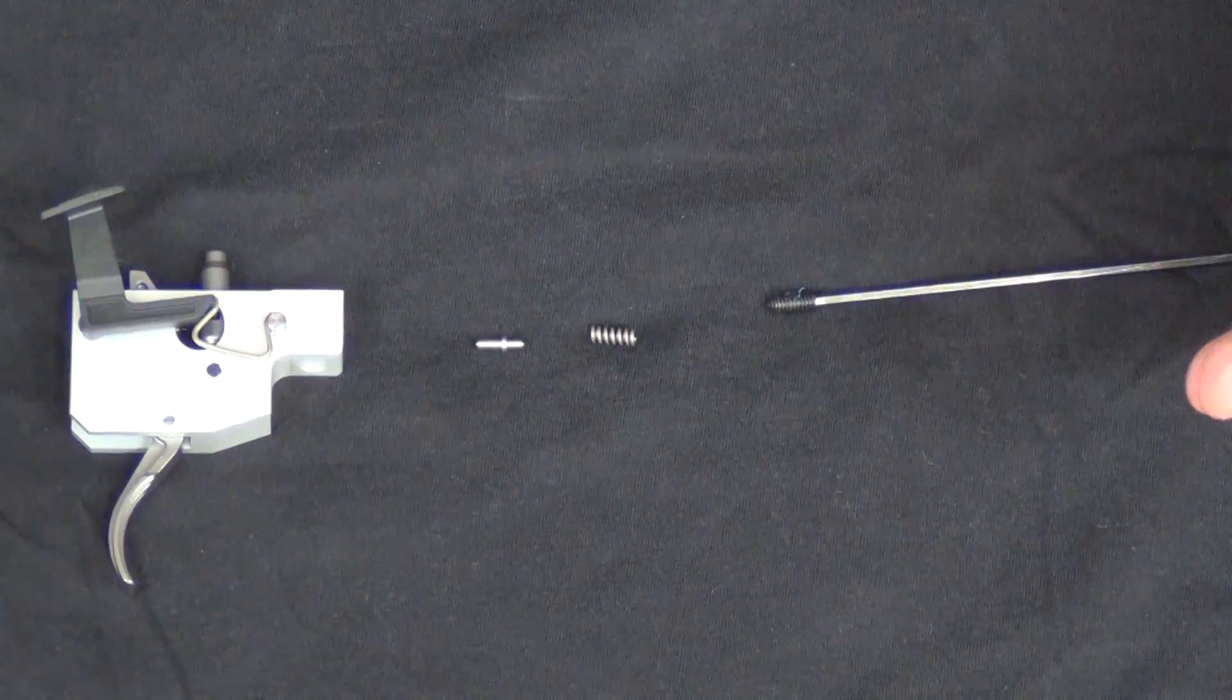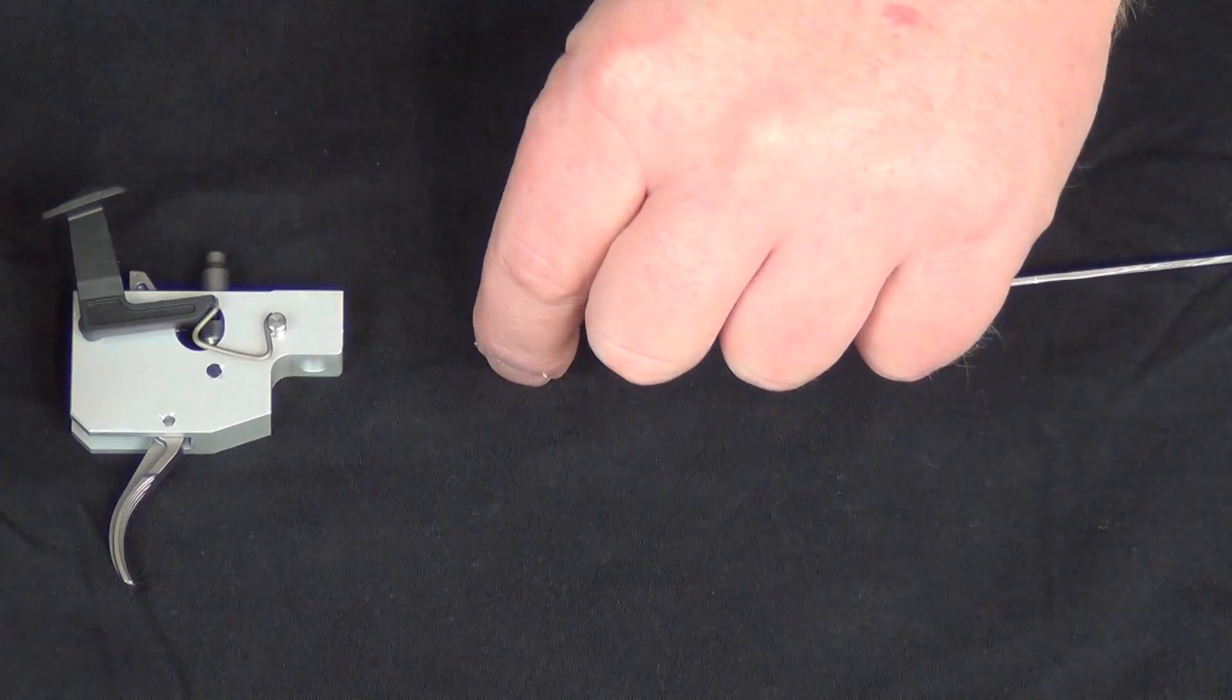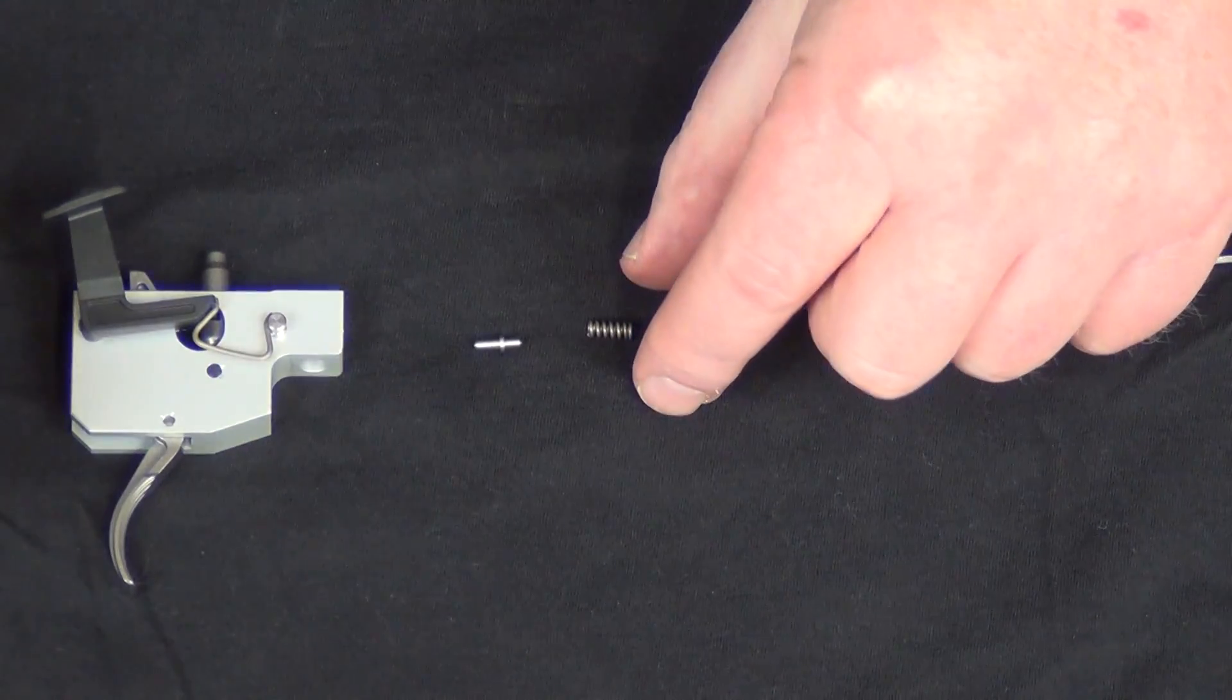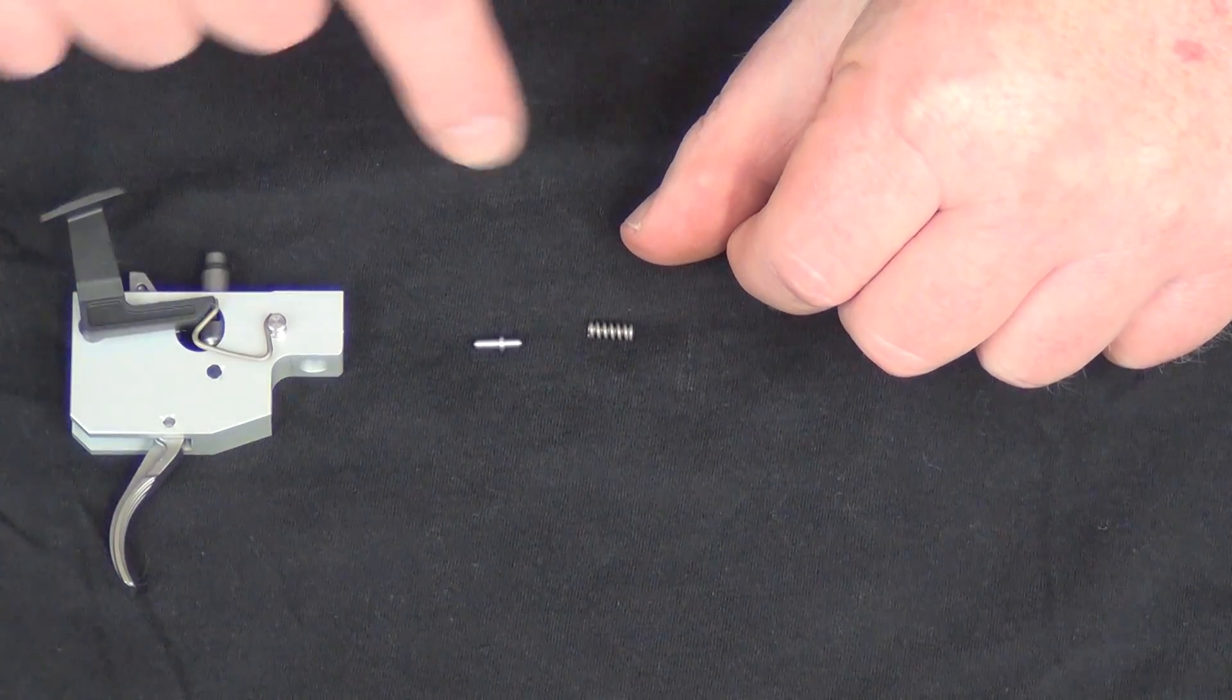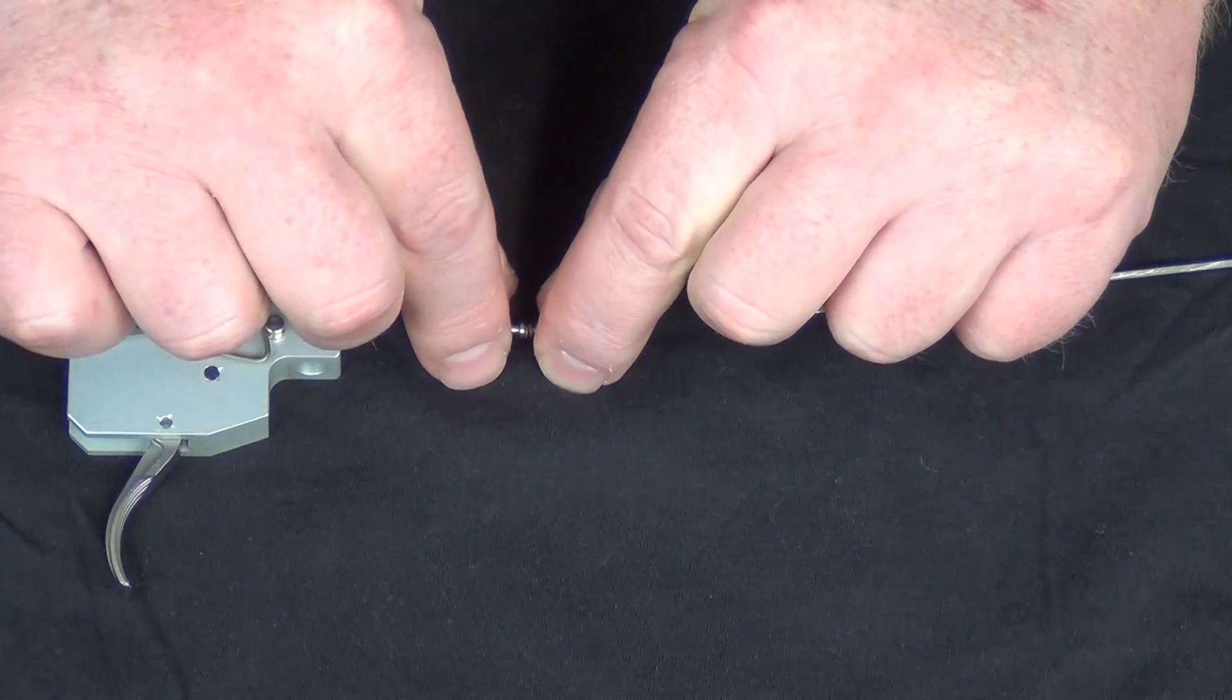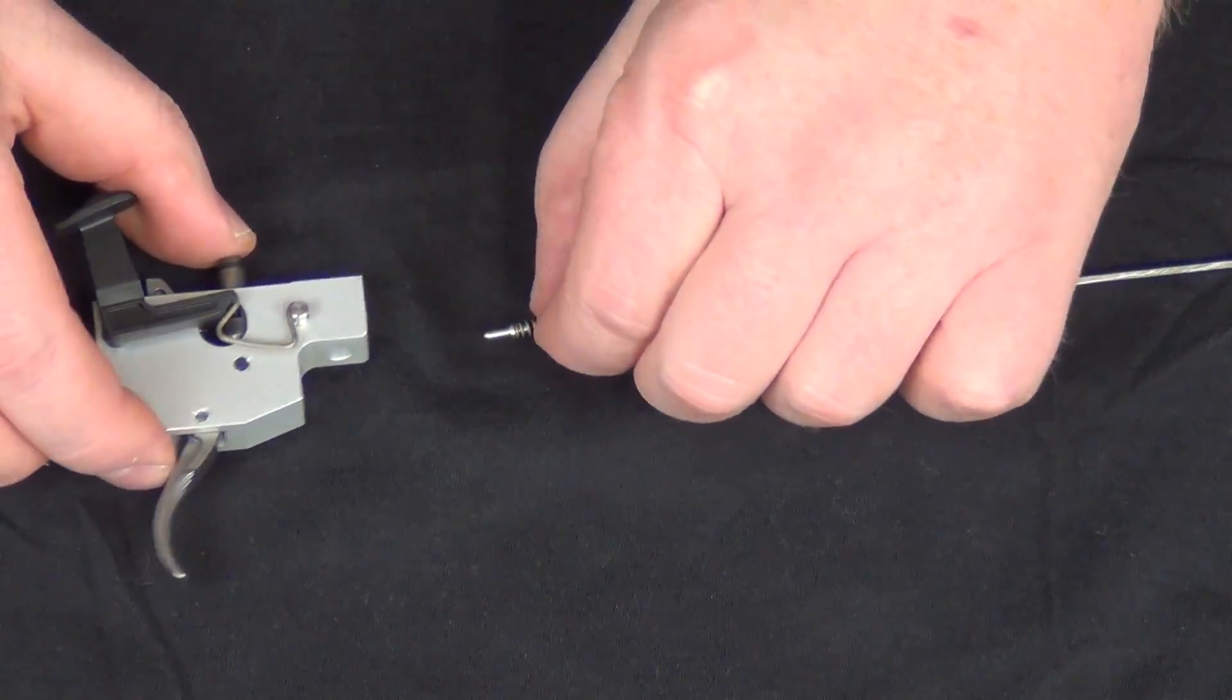So when you're installing our spring kit, do you have a lighter trigger pull? All you're doing is replacing this spring right here. And then you need to make sure that when you reassemble everything, this plunger is pointed in the right direction. There's a long rounded end that touches the trigger shoe, and then there's kind of a flat end. And that's just more of a guide for the spring. So we can kind of slip those together. And that's what that looks like inside the trigger pack.